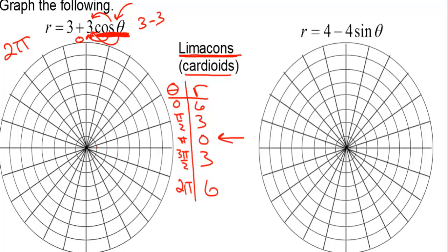Plotting: at 0, r is 6; at pi over 2, r is 3; at pi, r is 0 — that's where it touches the pole; at 3 pi over 2, r is 3; and back to 6. This graph goes a little wider than the maximum point, touches the pole, bounces off, goes a little wider, and back to where we started. It's symmetric over the x-axis. That's about as close as I can get it freehand.